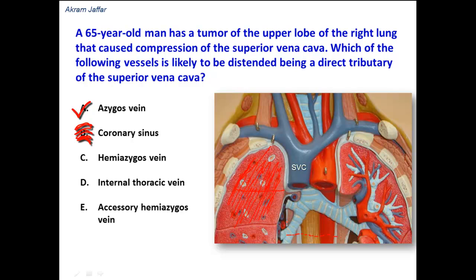So the hemi-azygous vein is not a direct tributary of the superior vena cava. The blood in the hemi-azygous and the accessory hemi-azygous veins ultimately drains into the superior vena cava, but they are not direct tributaries of the superior vena cava, as has been mentioned in the stem of this question.